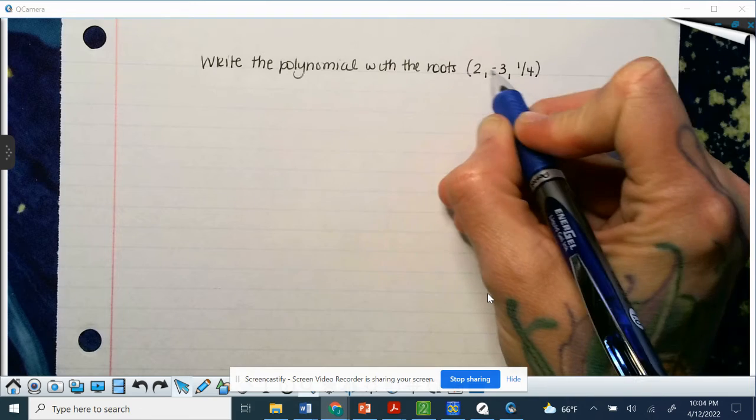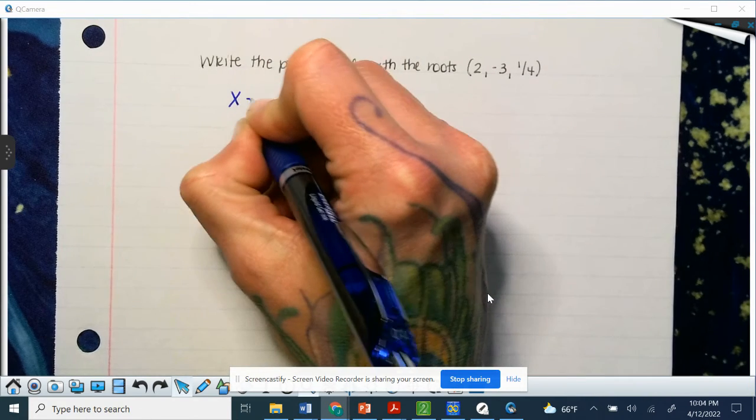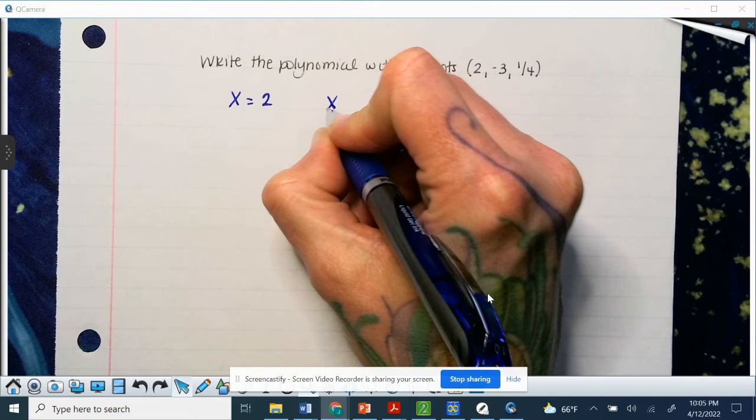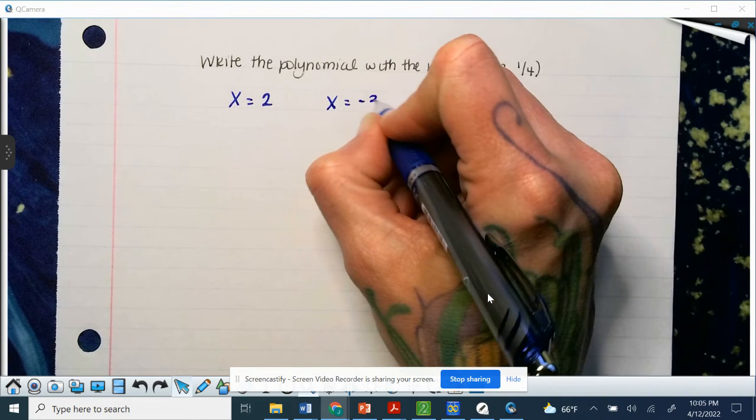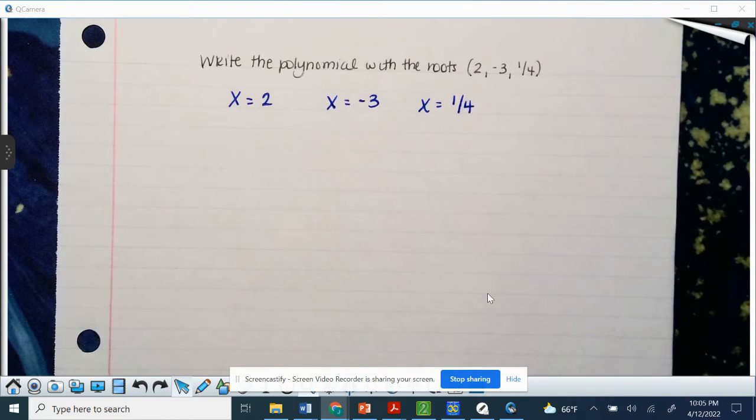Since these are each written once, that means they have a multiplicity of 1. So that means x is going to equal 2, x is going to equal negative 3, and x equals 1 fourth. And that means that graph is going to touch the x-axis at positive 2, negative 3, and 1 fourth.